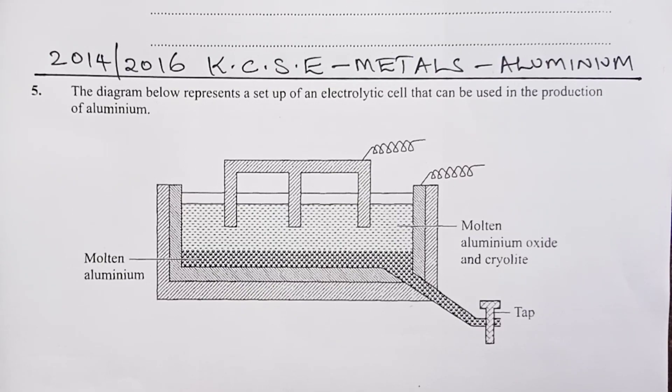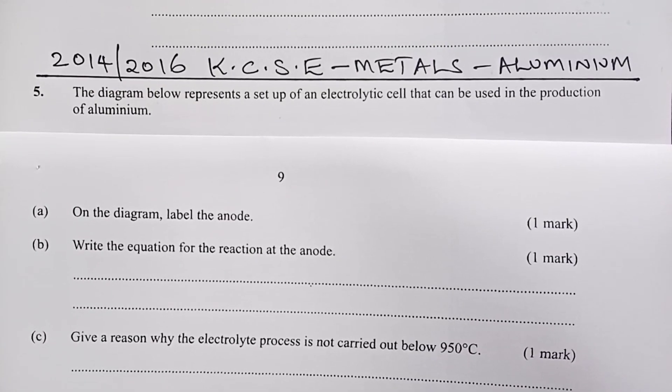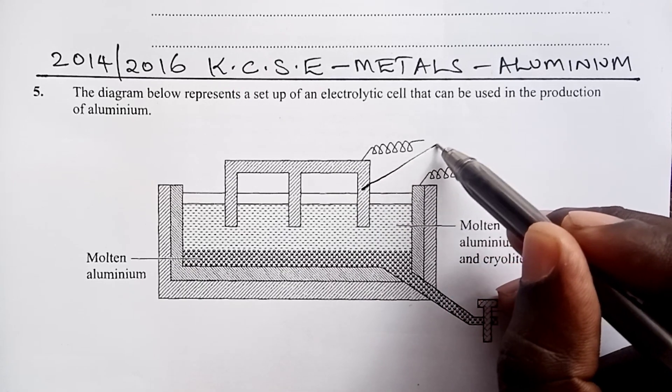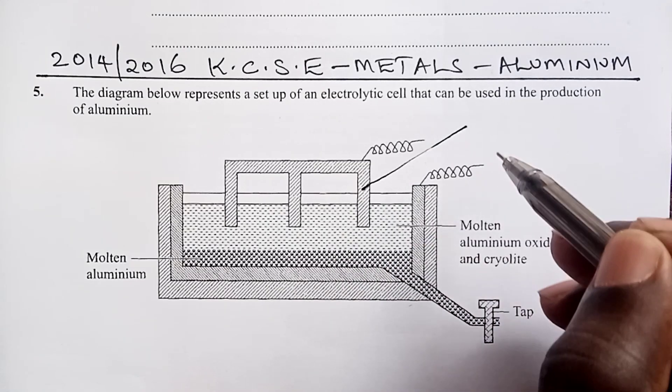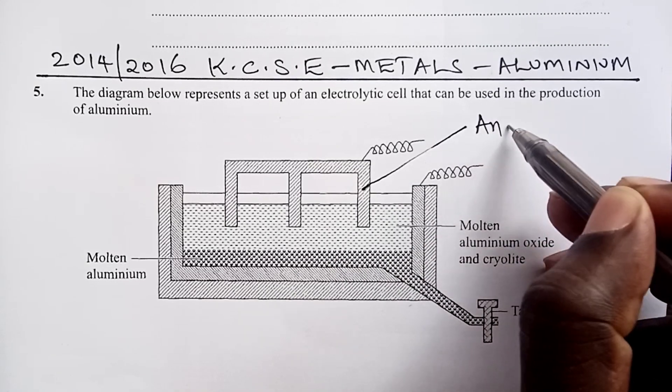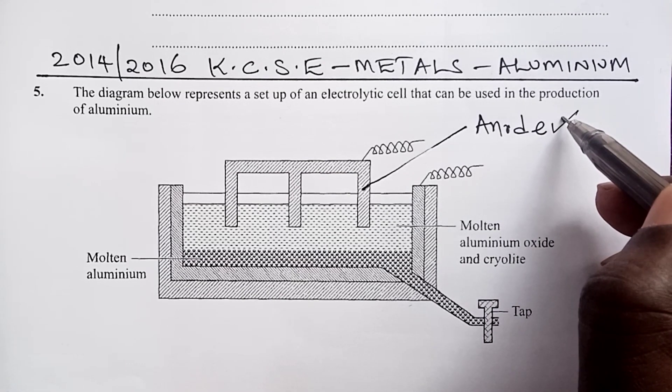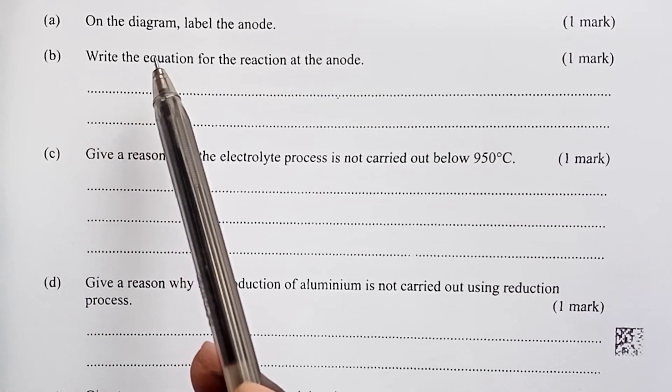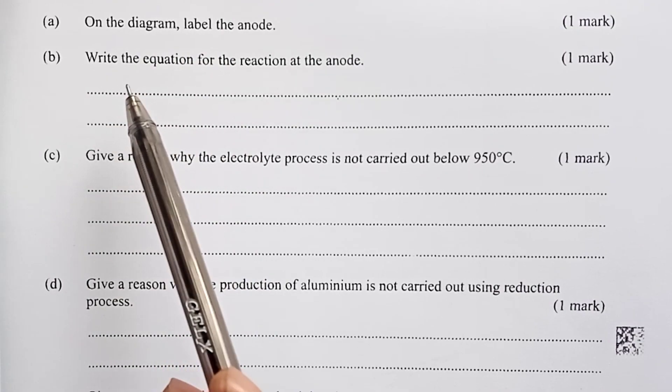The first question, we have been asked that on the diagram, label the anode for one mark. And this is very simple to do. The anode is any of these three electrodes that are dipped into the electrolyte. The examiner expected you to just label any one of them for one mark. We have already answered the question, part A, which demanded that we label the anode on the diagram.